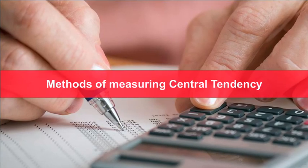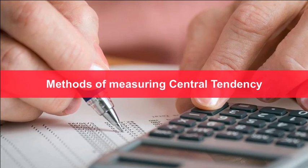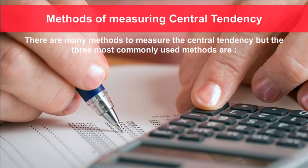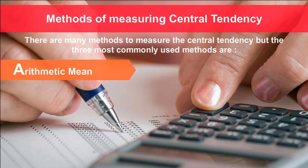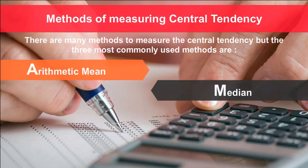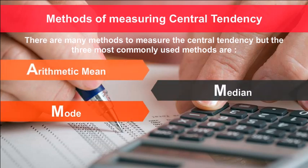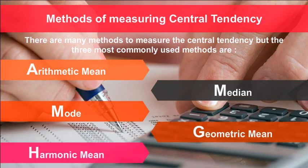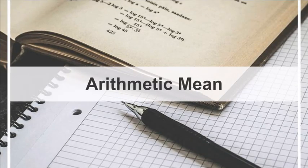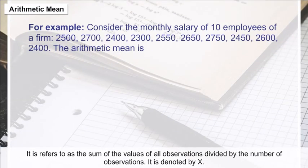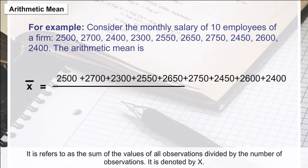There are many methods to measure central tendency, but the three most commonly used methods are: Arithmetic Mean, Median, and Mode. Other methods include Geometric Mean and Harmonic Mean.